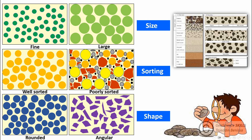In terms of sorting, rock texture can be described as well sorted or poorly sorted. Well sorted indicates homogeneity and similarity in grain size, while poorly sorted indicates grains with different sizes and shapes, as we can see here.